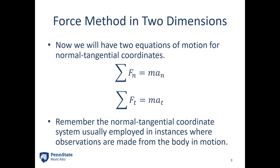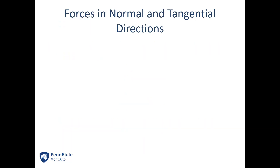The normal tangential coordinate system is usually employed in instances where observations are made from some body in motion. So if we are observing things from the cockpit of a plane or onboard a car, that's generally where we're going to be using these equations.